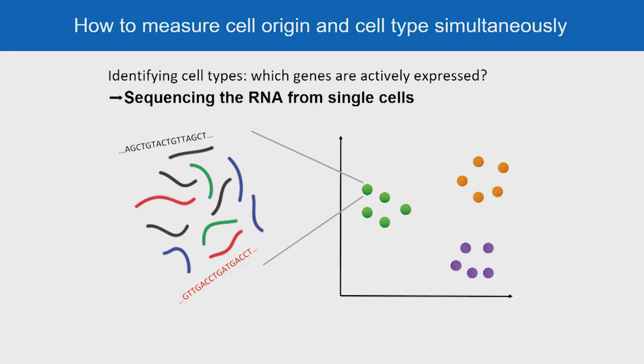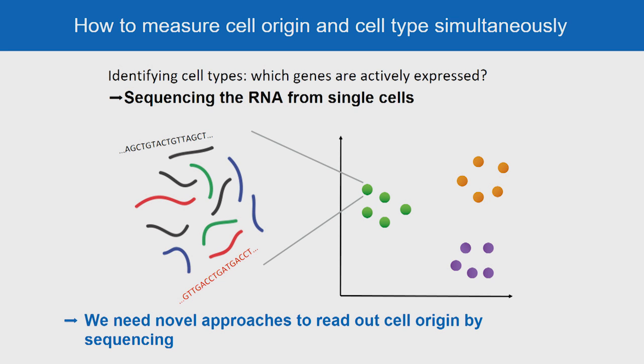How do we do that? To identify cell types, we need to know which genes are actively expressed. We can do that by sequencing the RNA from single cells, which allows us to identify all the different cell types in a population in an unbiased manner. This technique has become available about two or three years ago.